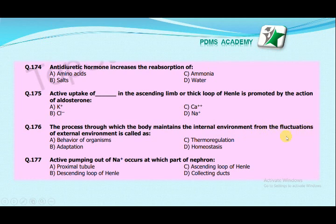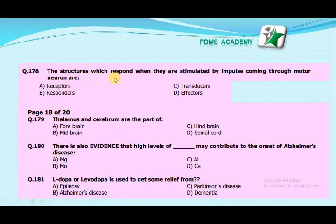The process through which the body maintains its internal environment against fluctuations of the external environment is called: behavior, adaptation, thermoregulation, or homeostasis? The correct answer is homeostasis. Active pumping out of sodium occurs at which part of the nephron: proximal tubule, descending loop of Henle, ascending loop of Henle, or collecting ducts? The correct answer is ascending loop of Henle.